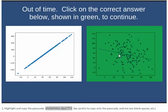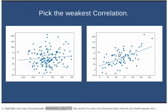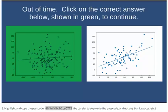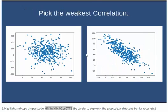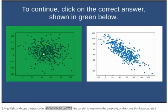If you wait too long to make a selection, the correct answer will be highlighted for you. If you click an incorrect answer — so if I were to click the wrong answer over here — this will be the wrong answer. The correct answer is then highlighted.